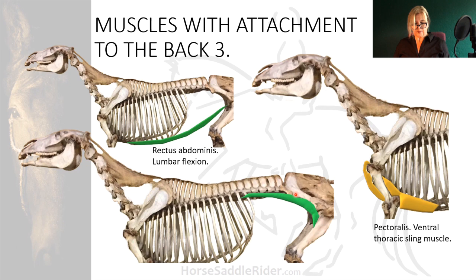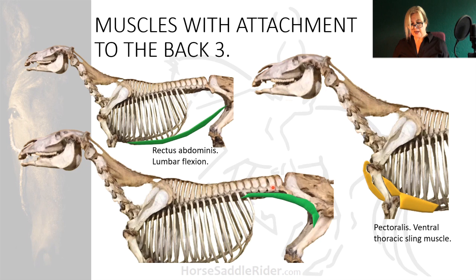Ground pole work with lots of stride lengthening as the theme is essential for postural development. This muscle is important for supporting and protecting the floating lumbar spine region as it facilitates lumbar sacral flexion for stride production, and the sacroiliac joint can strain easily if not well supported by this muscle system.